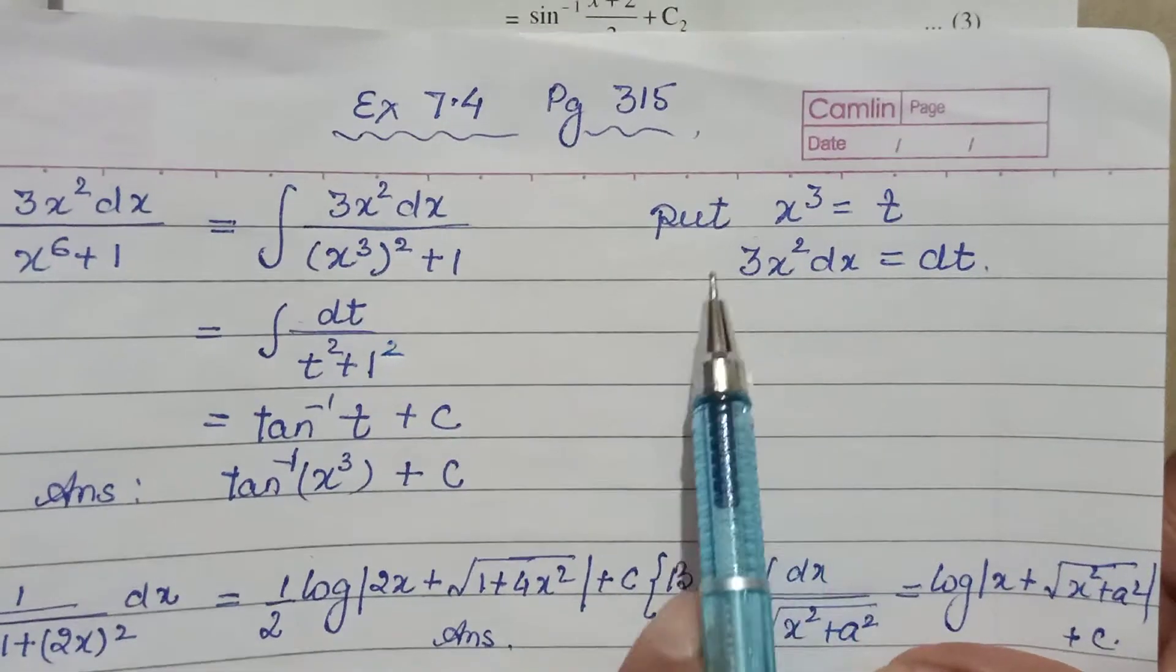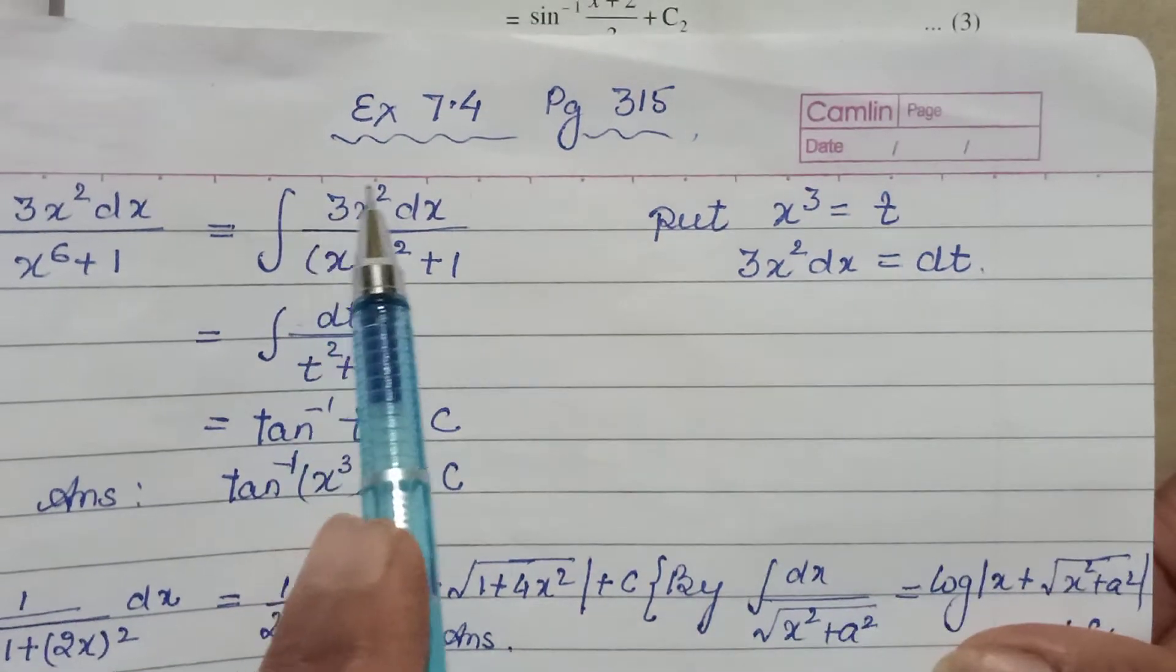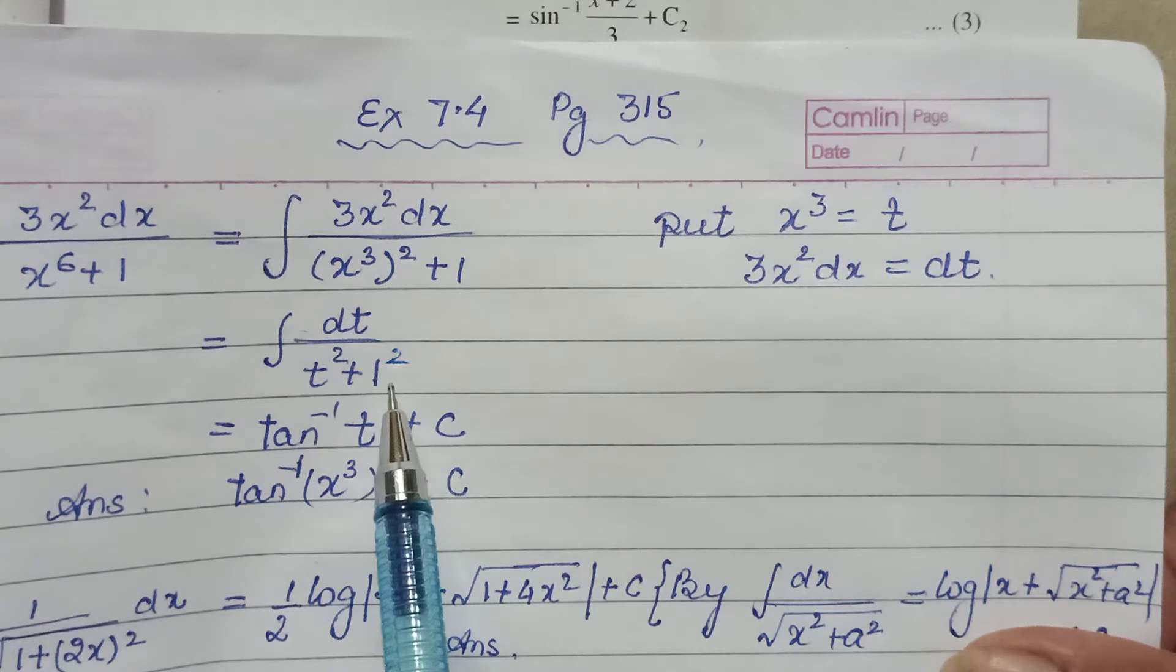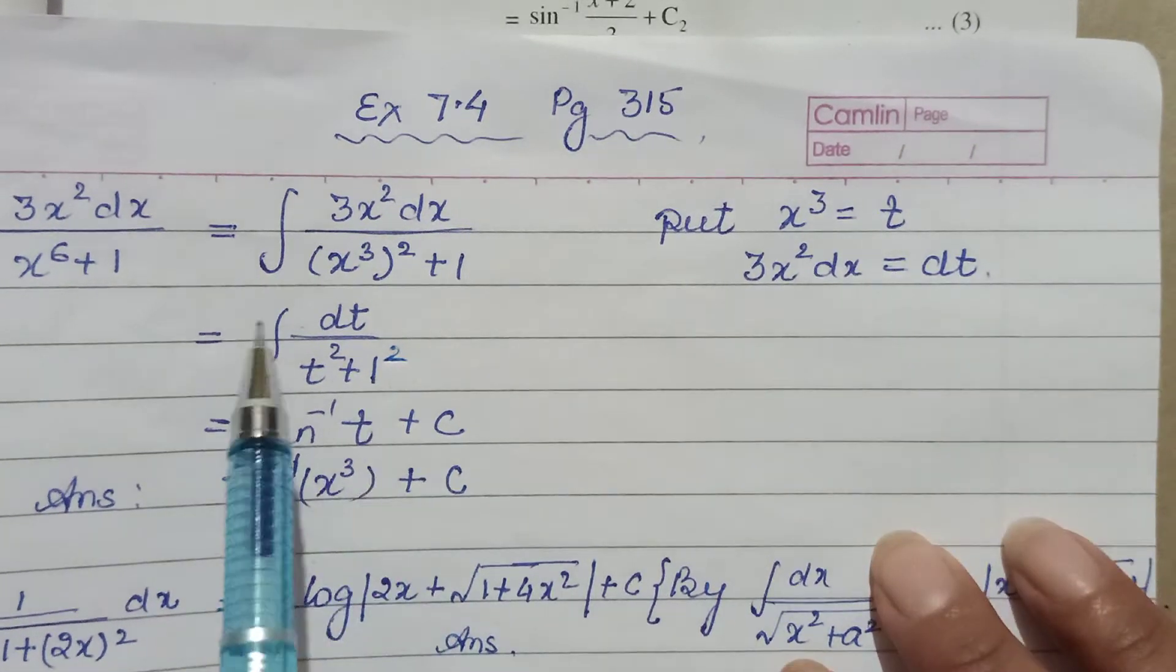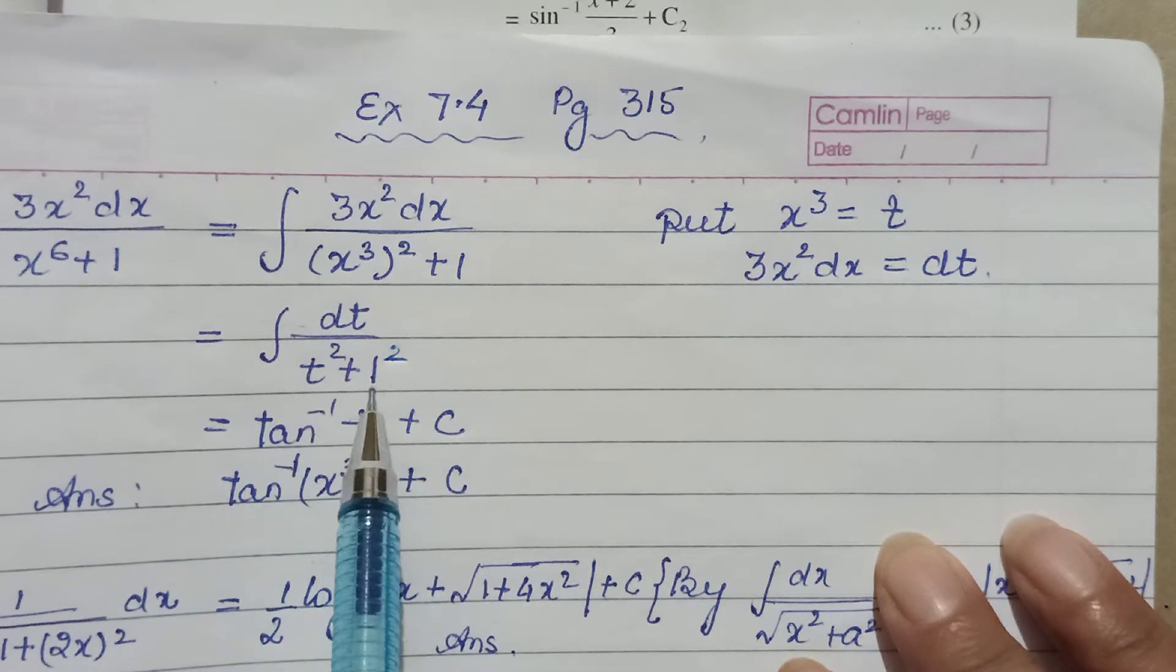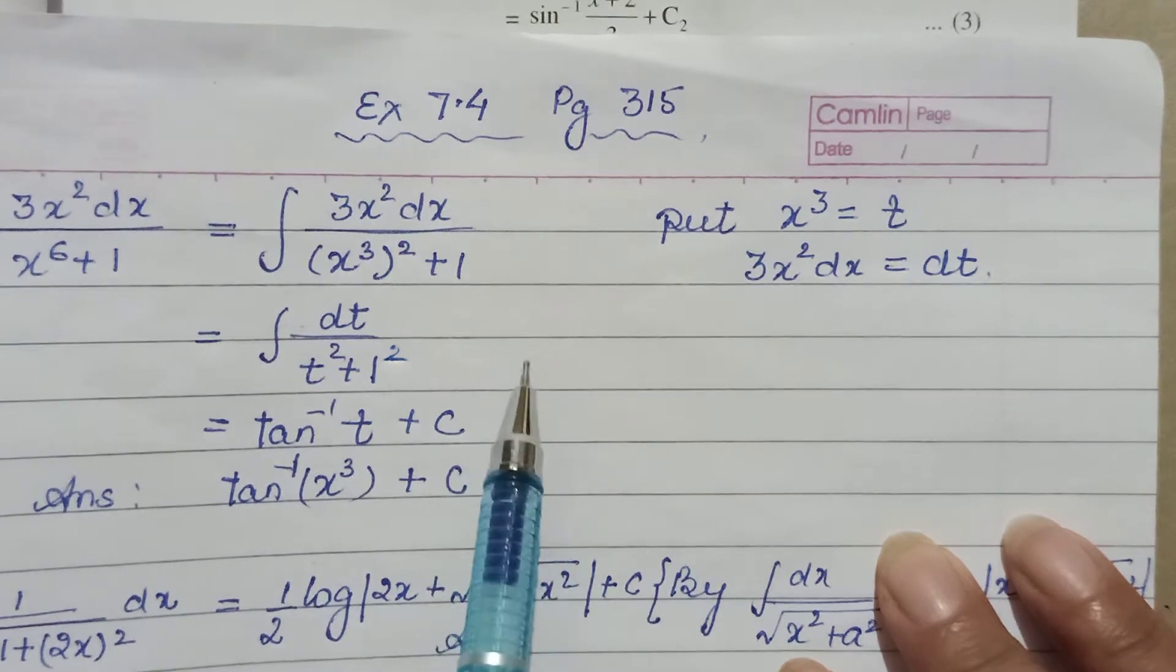We put x³ as t, then 3x² dx is replaced by dt. The whole numerator becomes dt and the denominator becomes t² + 1. This is a standard result we've studied: integration of 1/(x² + a²) is (1/a)tan⁻¹(x/a).